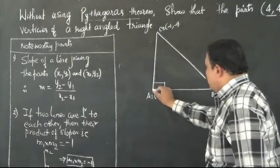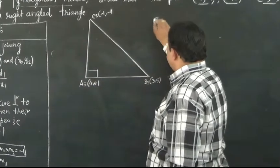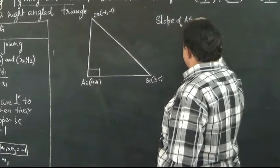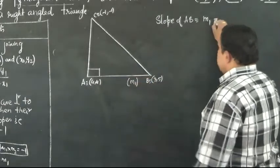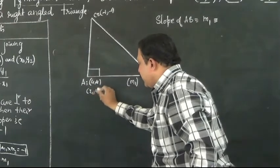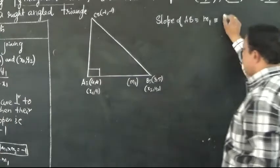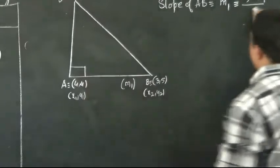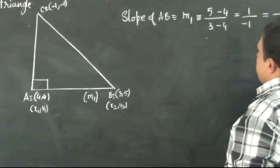Now, I want to prove that AB is perpendicular to AC. So I will consider the slope of AB. Let m1 denote the slope of AB. Slope is given by the formula y2 minus y1 over x2 minus x1. I regard this as (x1,y1) and B as (x2,y2). So the slope is 5 minus 4 divided by 3 minus 4, that is 1 upon minus 1, which equals minus 1.